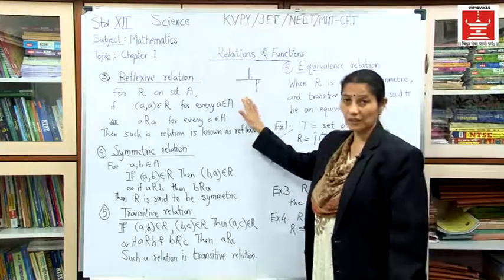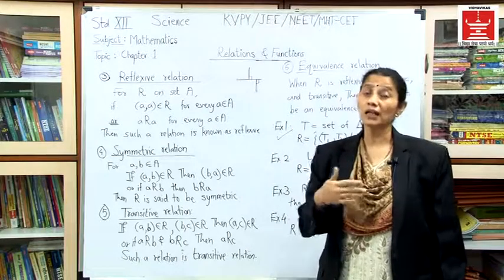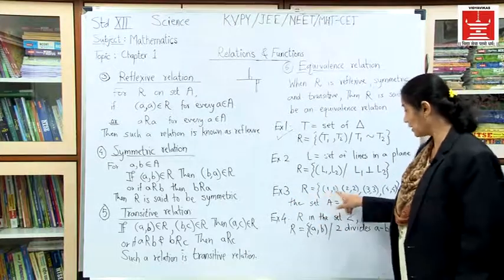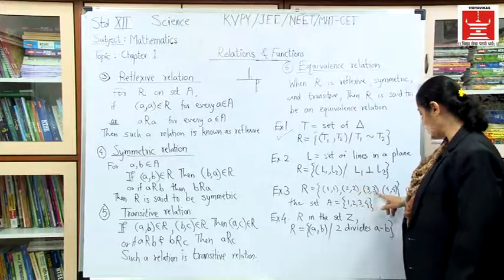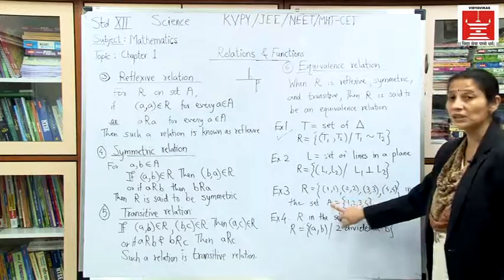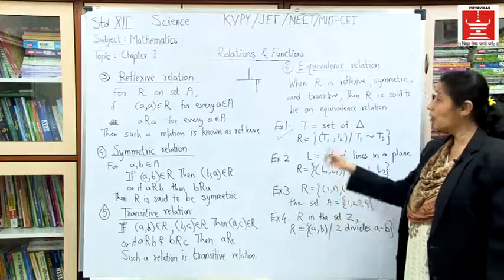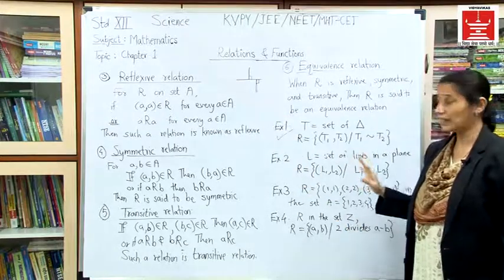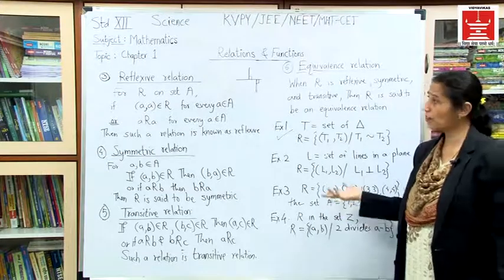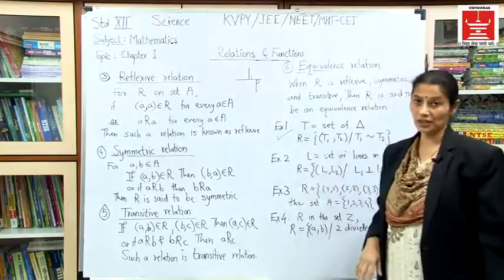For reflexivity, every element must be related to itself. Here: 1 is related to 1, 2 is related to 2, 3 is related to 3, and 4 is related to 4 — all elements belong to set A. Every element of A satisfies this condition, so it is a reflexive relation.